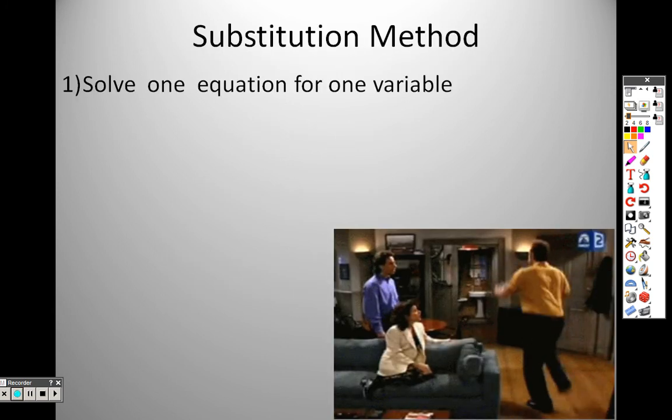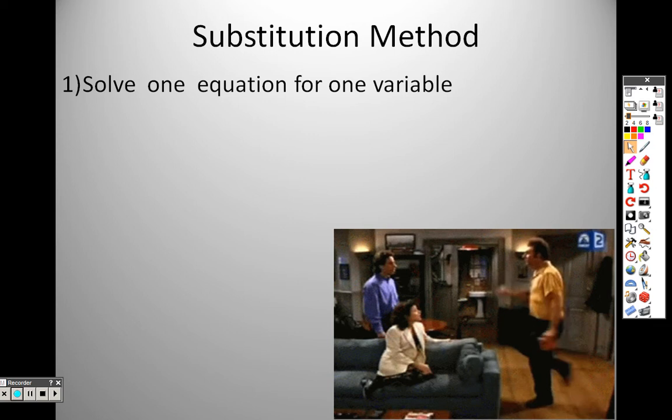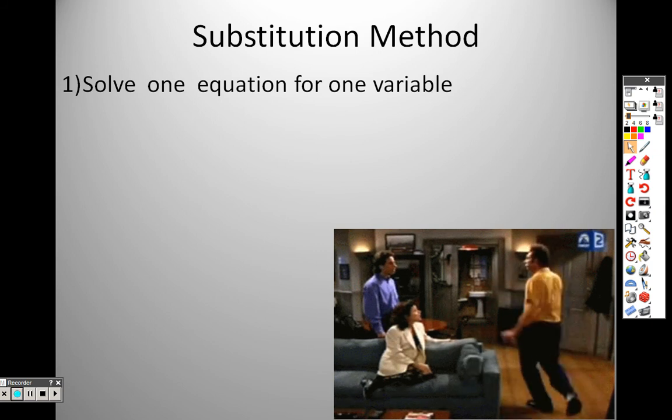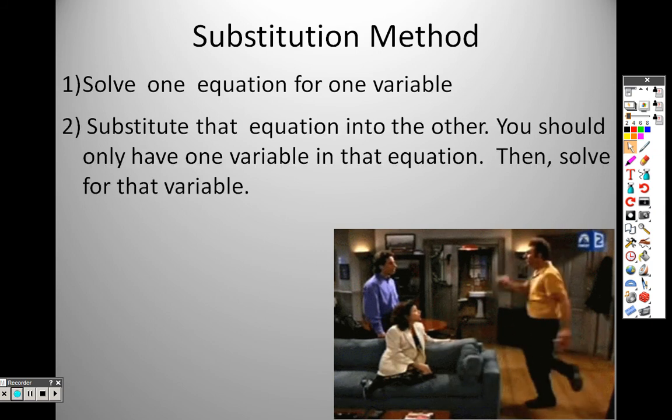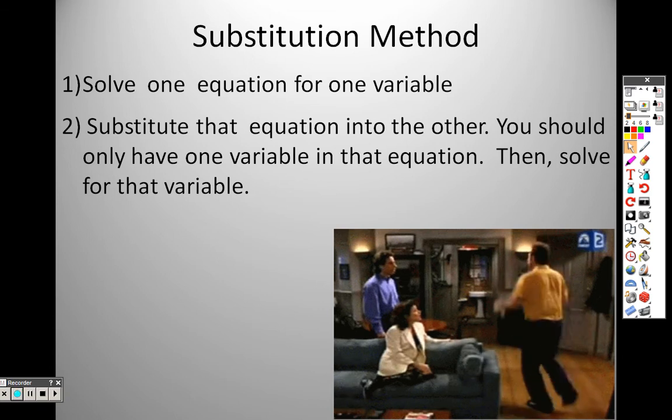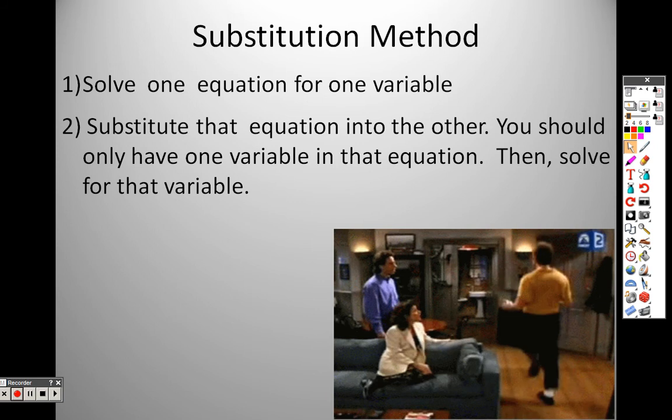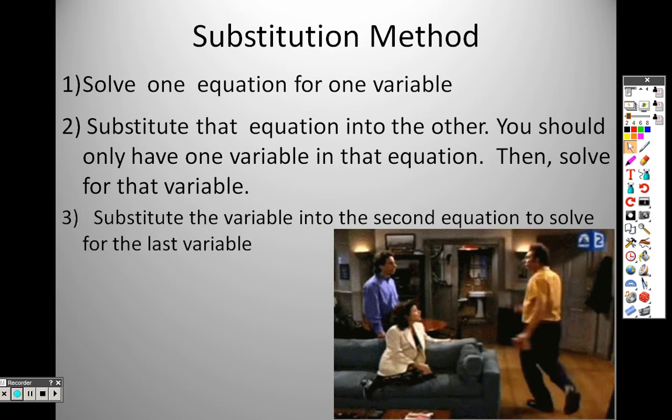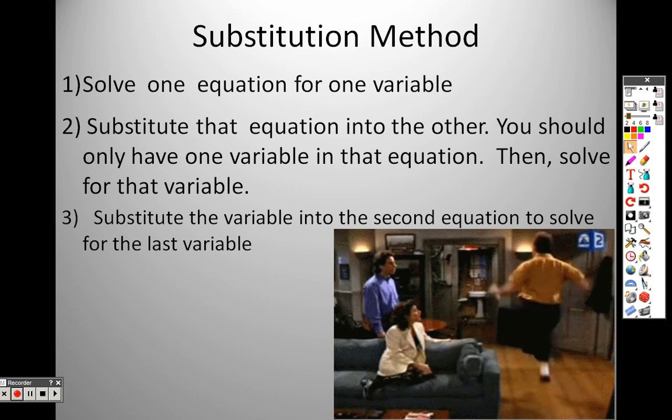So, we first have the substitution method, which is my least favorite method, but can be easier sometimes. The first step with the substitution method is you solve one equation for one variable. Then you substitute that entire equation into the other. That takes a variable out. You only have one variable left, so you can just solve for that one variable like you would any other equation, and take that answer and substitute it back into the second equation to find the last variable. Word-wise, sounds very confusing. Don't blame you. But once you see an example and how to do it, you'll understand exactly what I'm saying here.